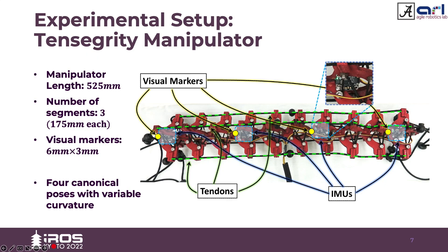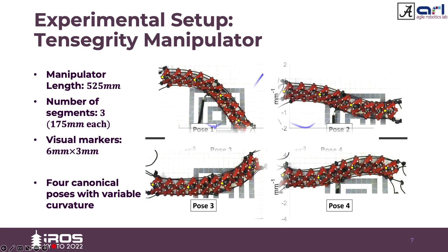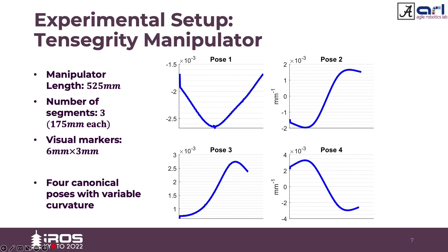The model is tested using a tensegrity manipulator whose shape can be changed by adjusting cable lengths. The yellow circles indicate the visual markers, and IMUs were also placed at the same locations. The entire manipulator length is about 525 mm, divided into three equal segments. By changing the length of the tendons, four different canonical poses are obtained where sensor measurements were recorded, chosen to exhibit different curvature profiles along the manipulator length.